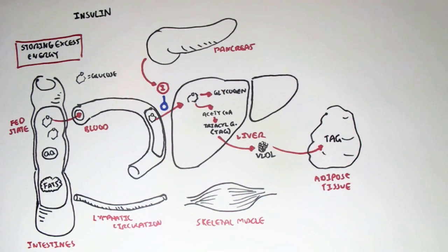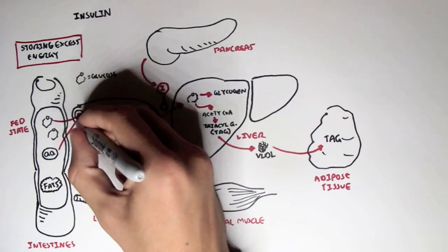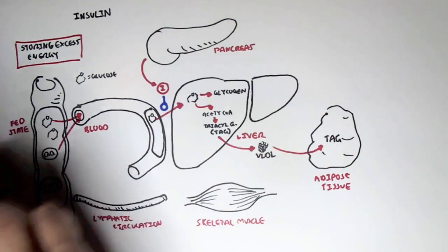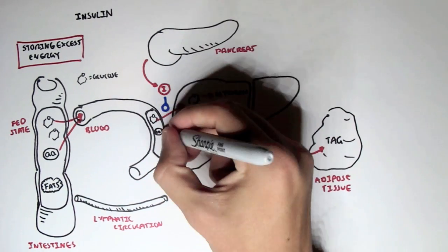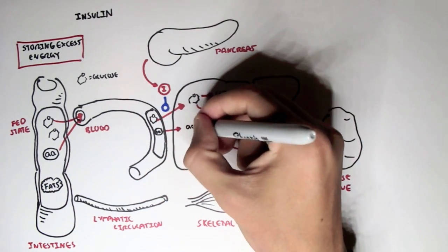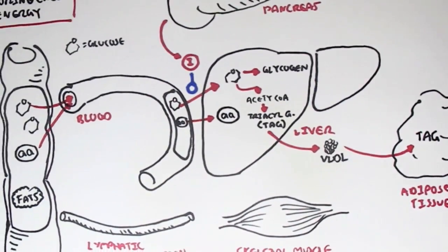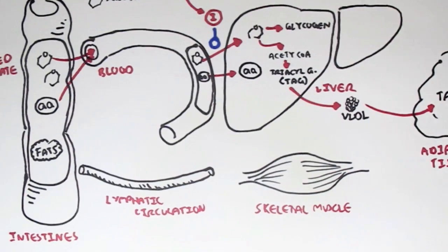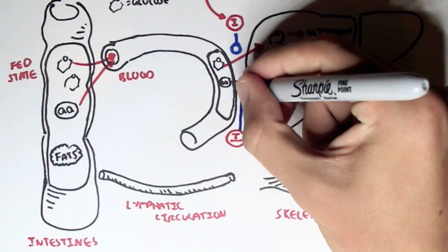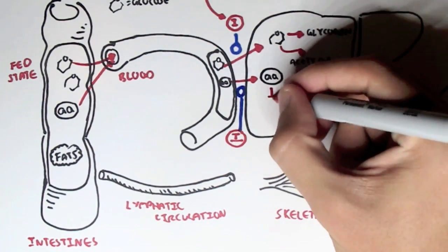Insulin also has an effect on amino acids. Amino acids will be absorbed by the blood, and insulin will promote the uptake of amino acids from the bloodstream to the liver, then promote proteogenesis, therefore promoting protein synthesis.